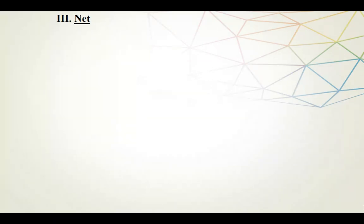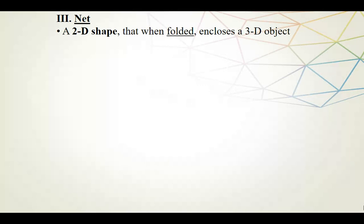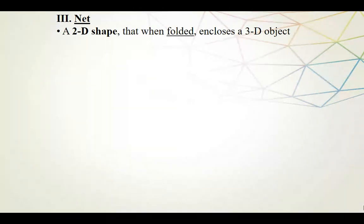Let's start off by talking about what a net actually is. A net is a two-dimensional shape that when folded encloses a three-dimensional object. When I say a two-dimensional shape, it means it could fit on a piece of paper — it just has two dimensions. For example, it might just have length and width, as opposed to a three-dimensional object which has length, width, and height.